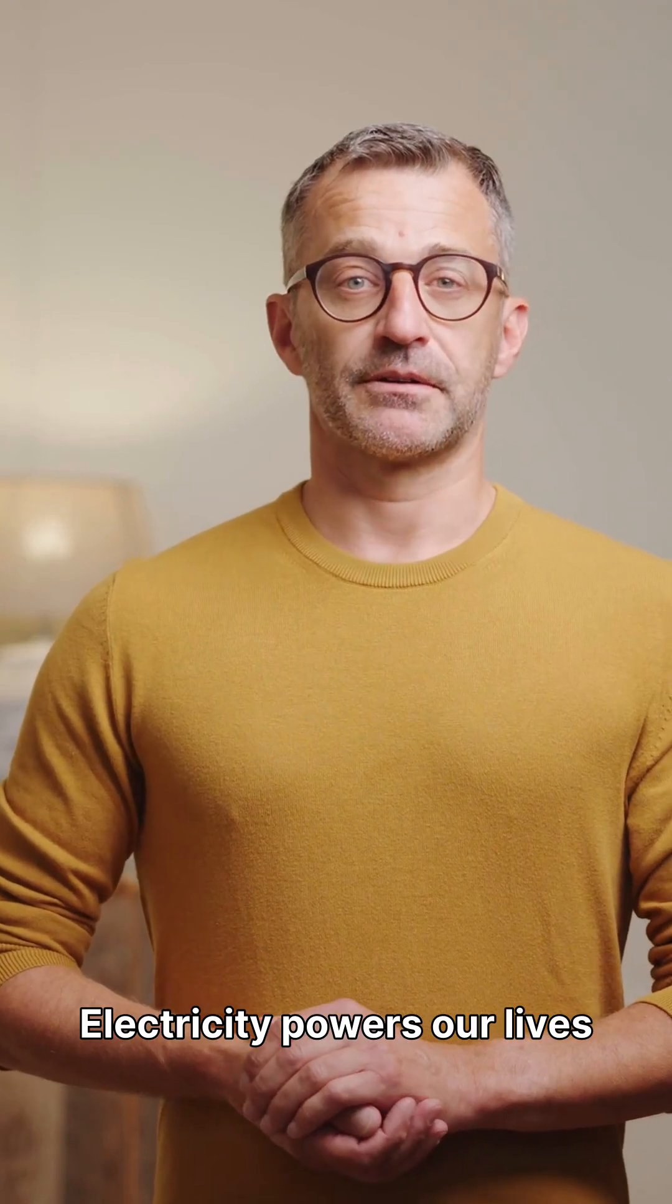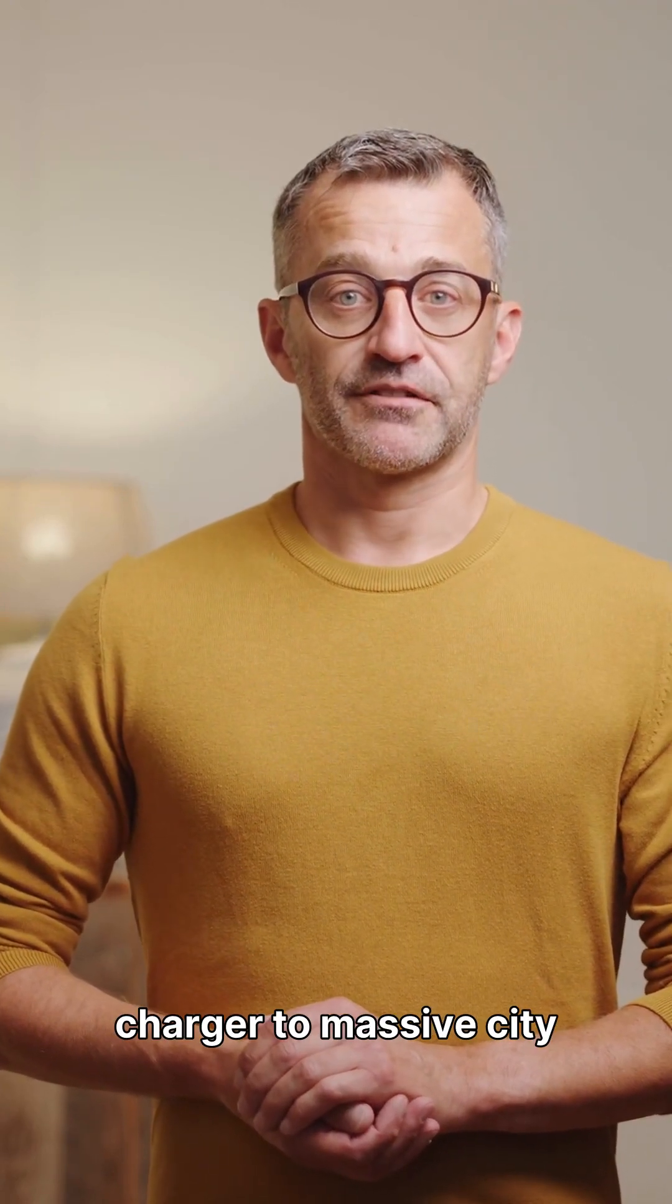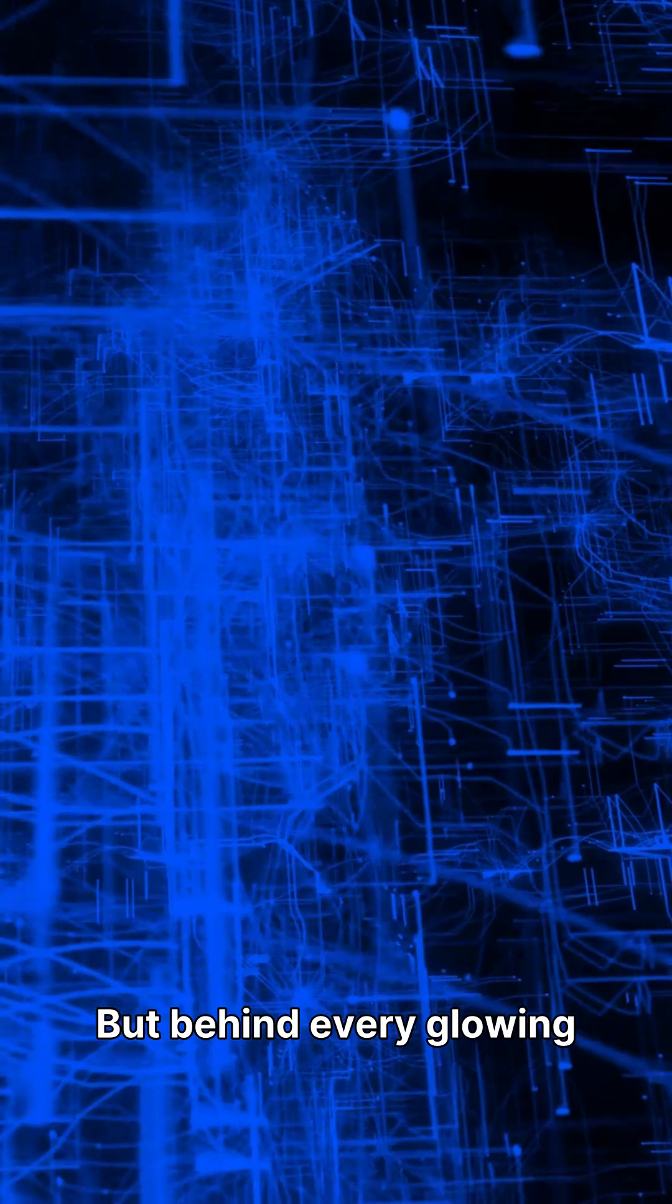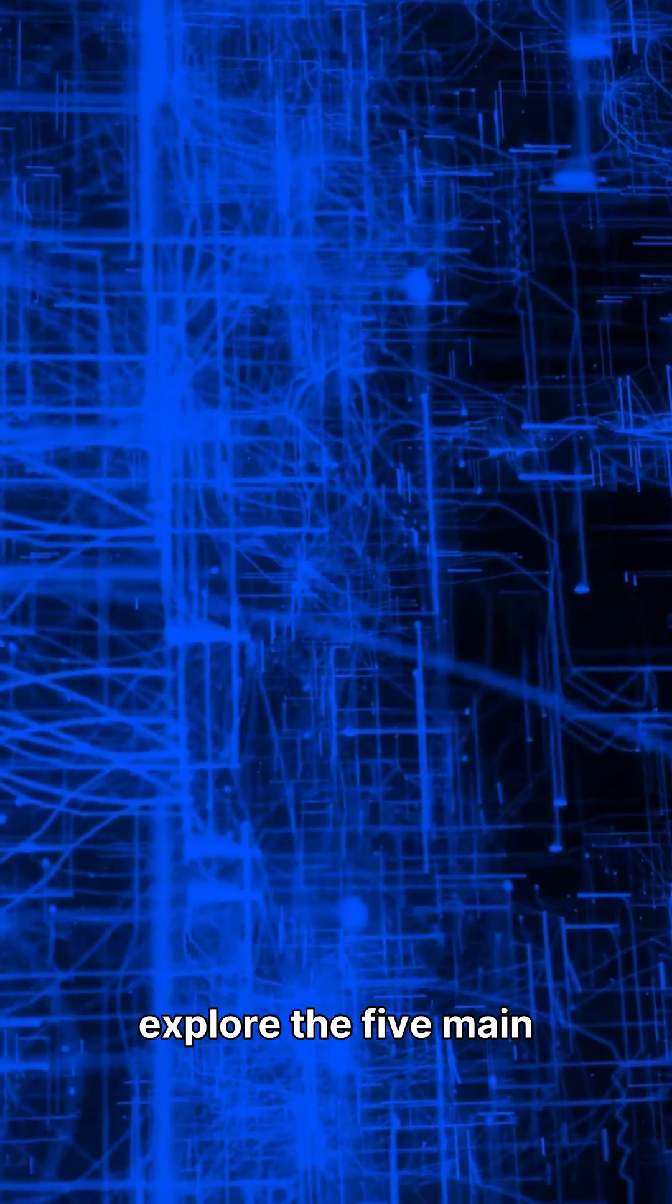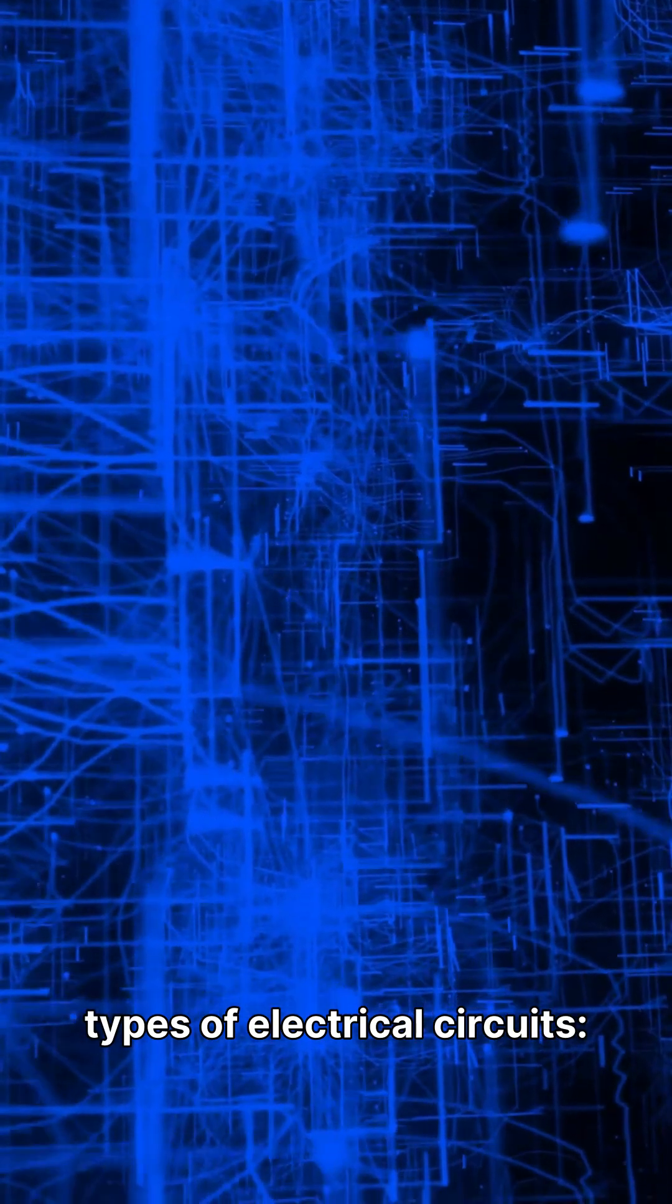Electricity powers our lives, from your mobile charger to massive city grids. But behind every glowing light and running machine, there's one thing in common: an electrical circuit. And not all circuits are the same. In this video, let's explore the five main types of electrical circuits.